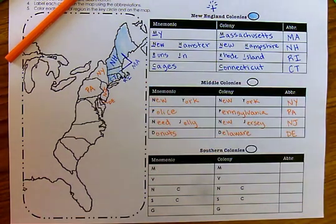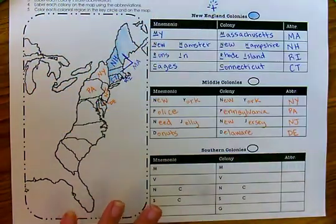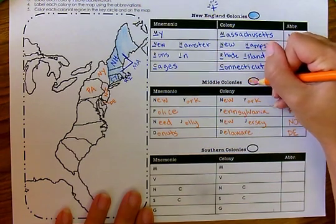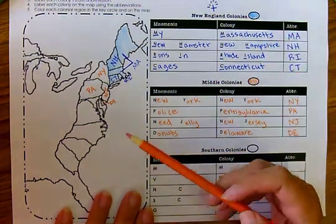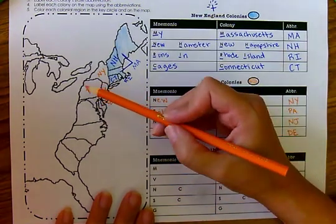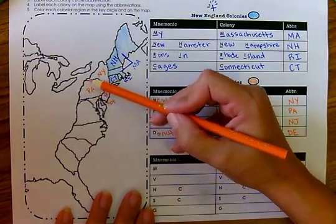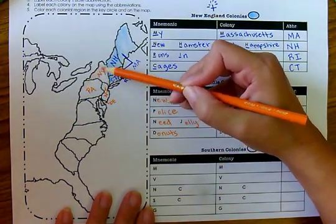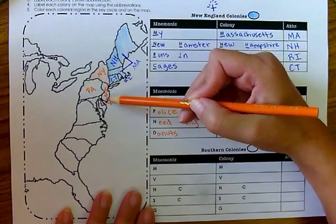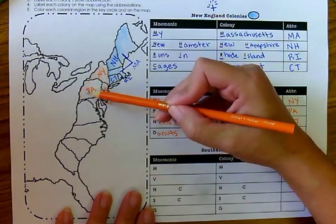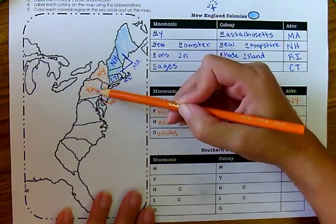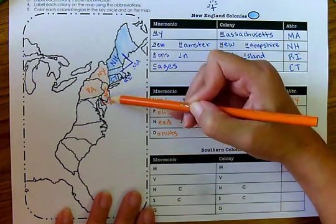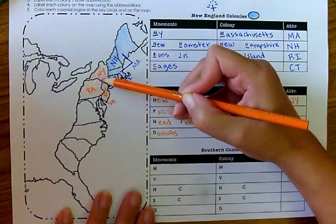Middle colonies — we're going to go ahead and shade them in. I'm going to take my colored pencil. Make sure when you shade it in on the map, you don't shade too dark because you don't want to cover up that color you already have in there. Sometimes kids will color it too dark and we can't see what's under there. So I'm going to shade in my middle colonies: New York, Pennsylvania, New Jersey, and then of course little bitty Delaware.